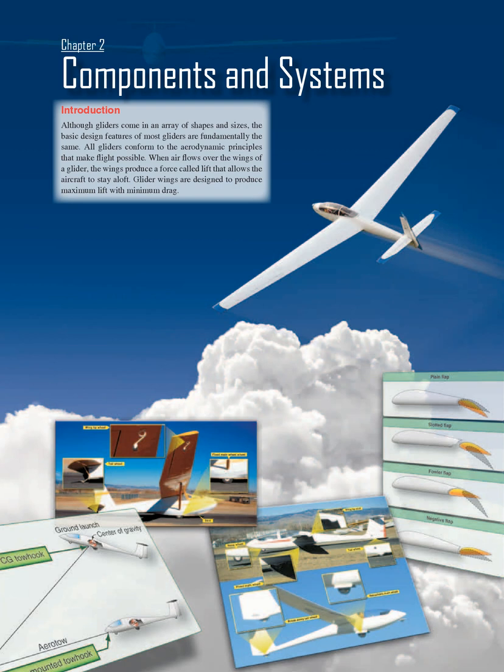Chapter 2: Components and Systems Introduction. Although gliders come in an array of shapes and sizes, the basic design features of most gliders are fundamentally the same. All gliders conform to the aerodynamic principles that make flight possible. When air flows over the wings of a glider, the wings produce a force called lift that allows the aircraft to stay aloft. Glider wings are designed to produce maximum lift with minimum drag.